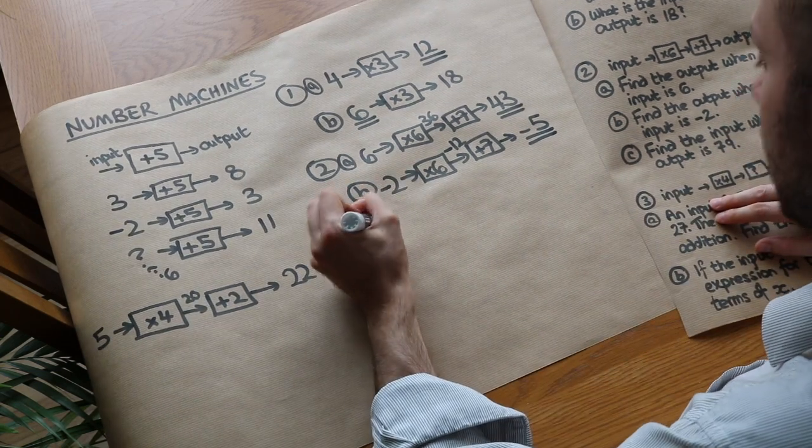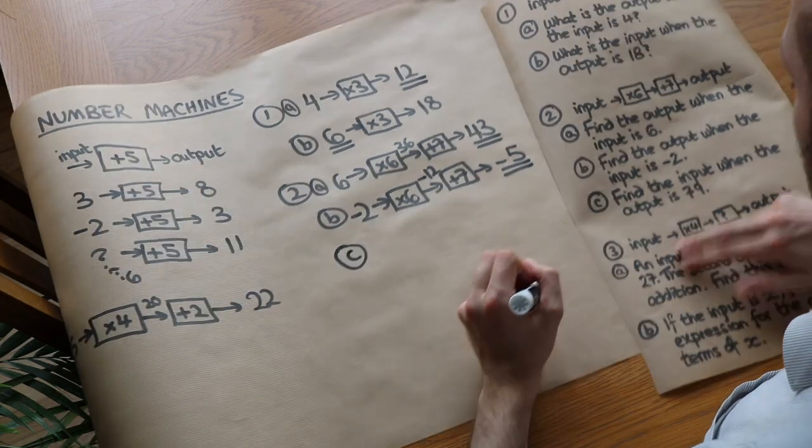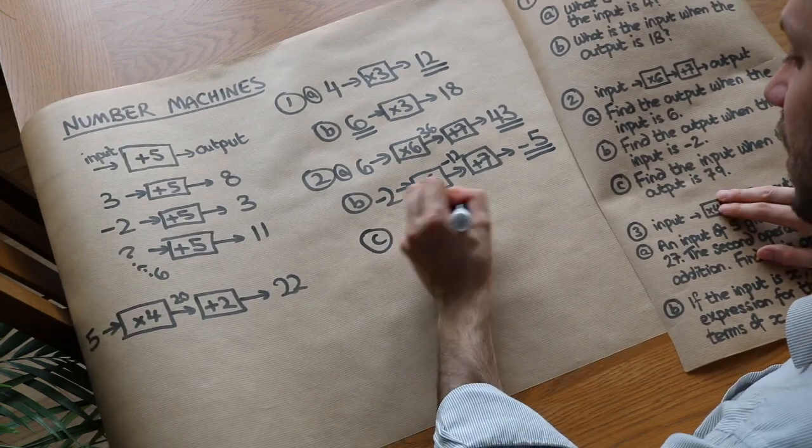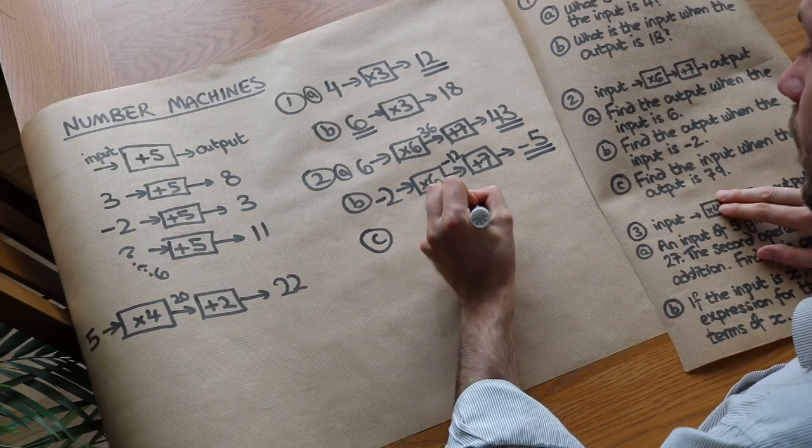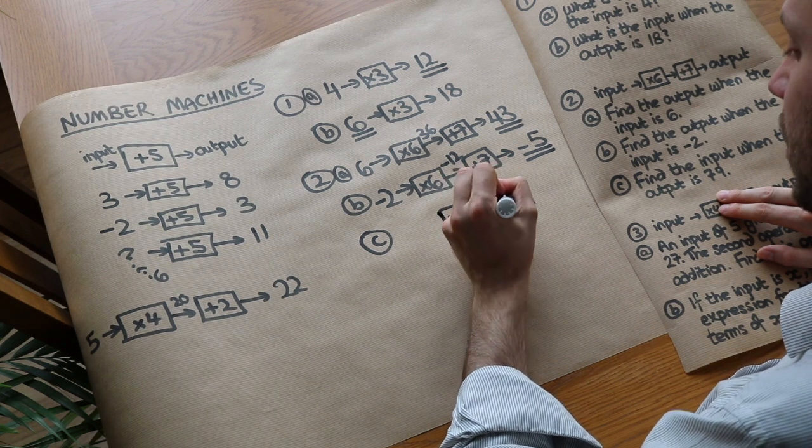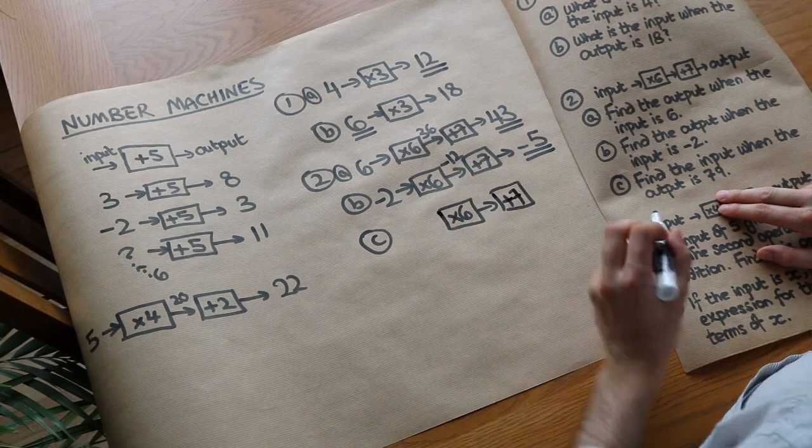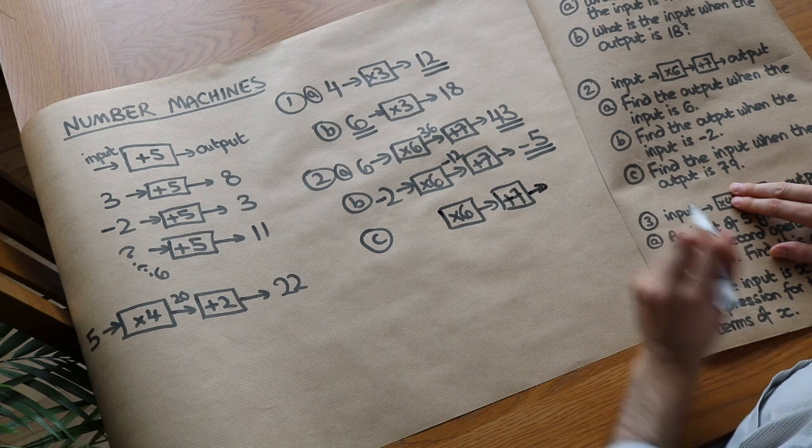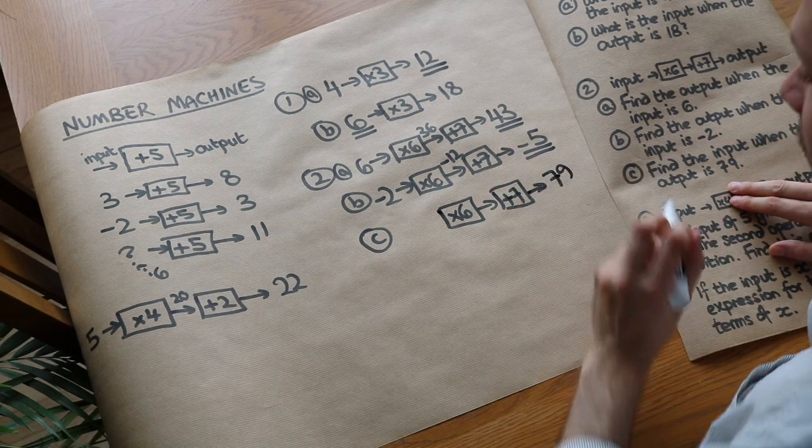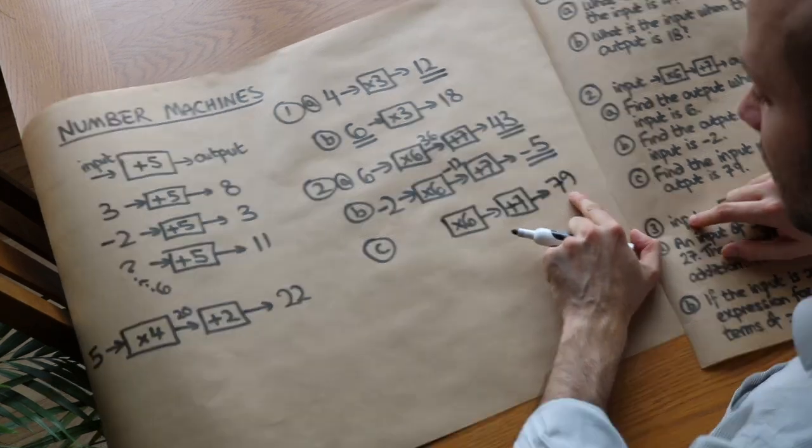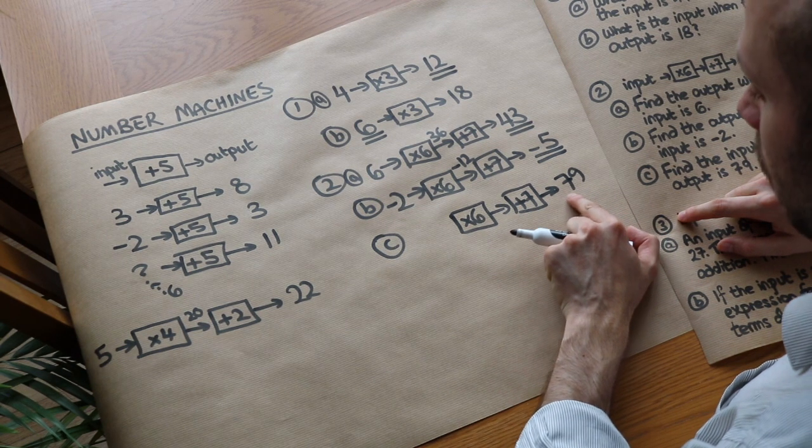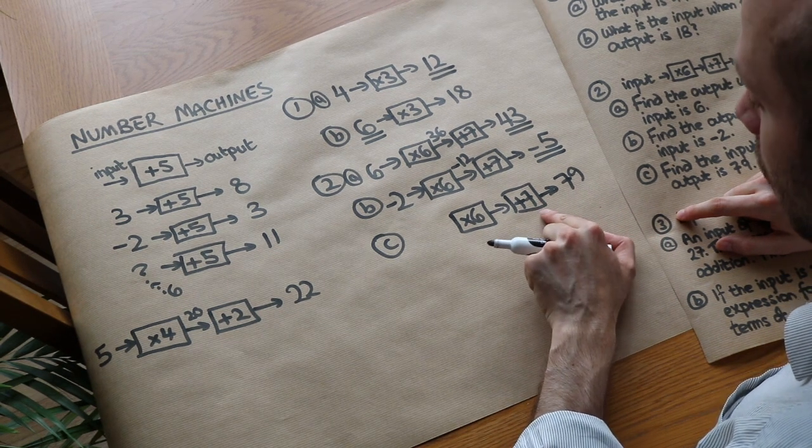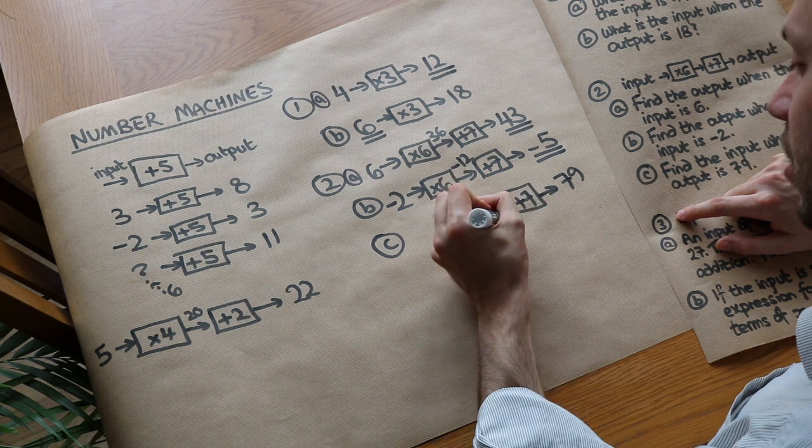And finally C, find the input when the output is 79. So this time we're given the output, so I'm going to copy these same number machines. But the output, i.e. on the right, is 79. Now we've got to work our way backwards. So 79, we do the opposite of adding 7 to undo it.